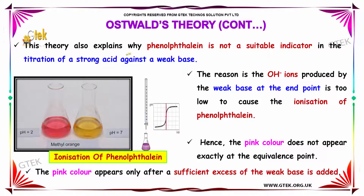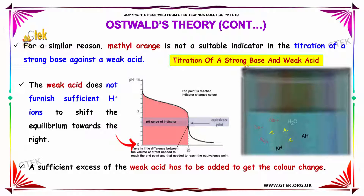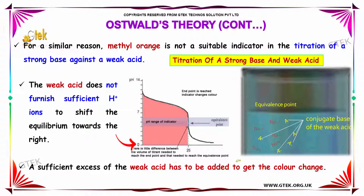This theory also explains why phenolphthalein is not a suitable indicator in the titration of a strong acid versus a weak base. The reason is, the OH⁻ ions produced by the weak base at the endpoint are too low to cause the ionization of phenolphthalein. Hence, the pink color does not appear exactly at the equivalence point; it appears only after a sufficient excess of weak base is added. For a similar reason, methyl orange is not a suitable indicator in the titration of a strong base against a weak acid, as the weak acid does not furnish sufficient H⁺ ions to shift the equilibrium. A sufficient excess of the weak acid has to be added to get the color change.